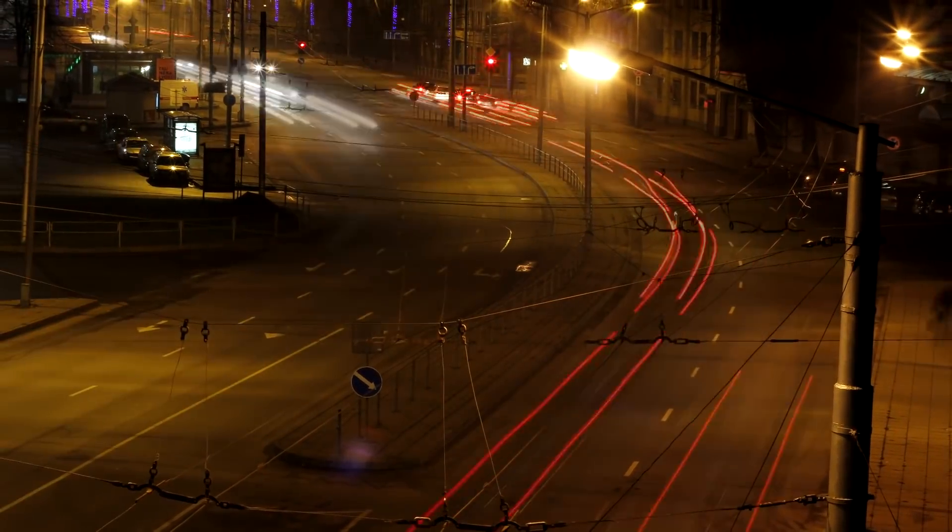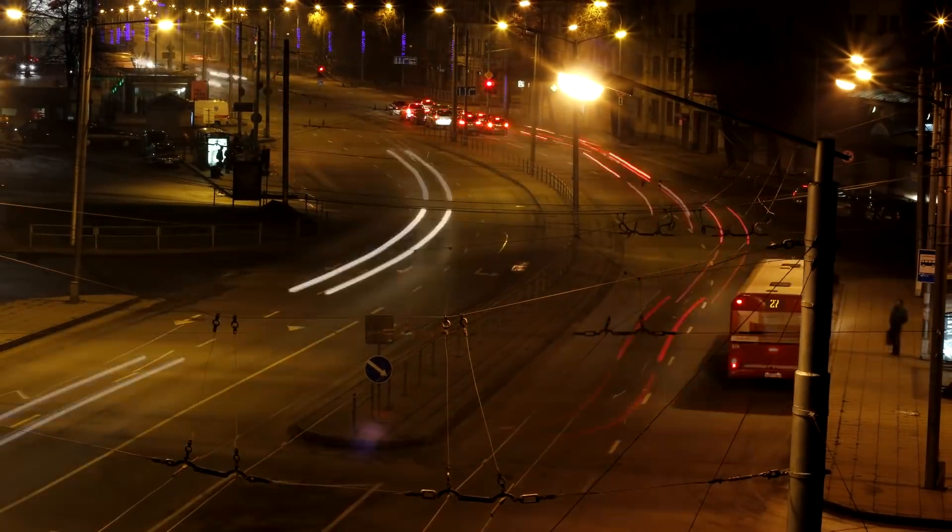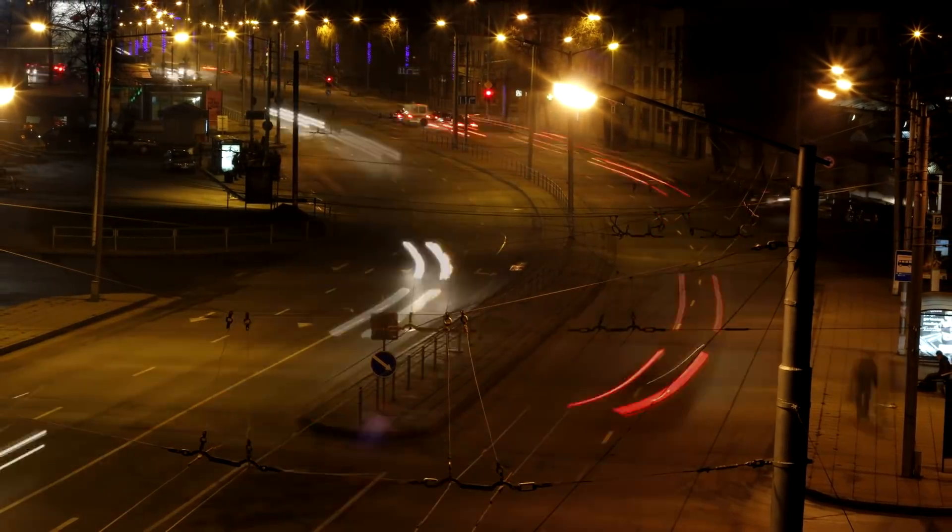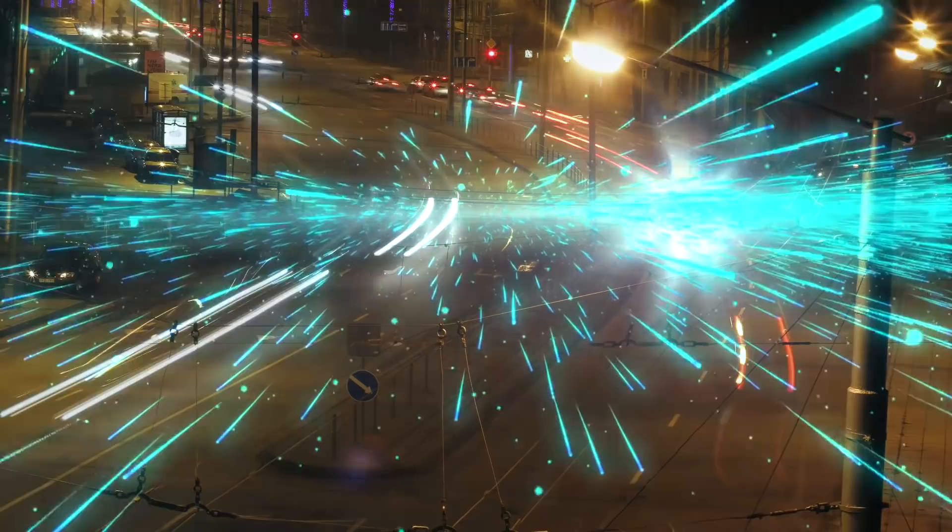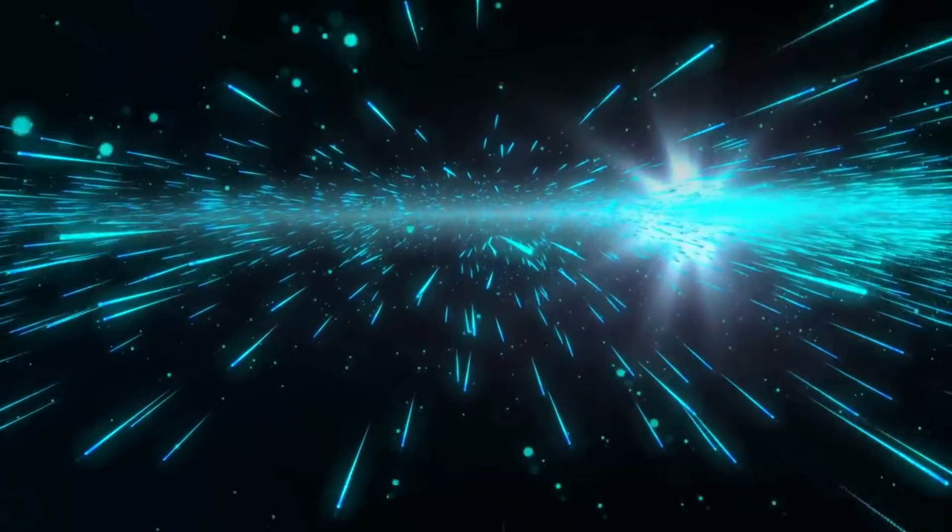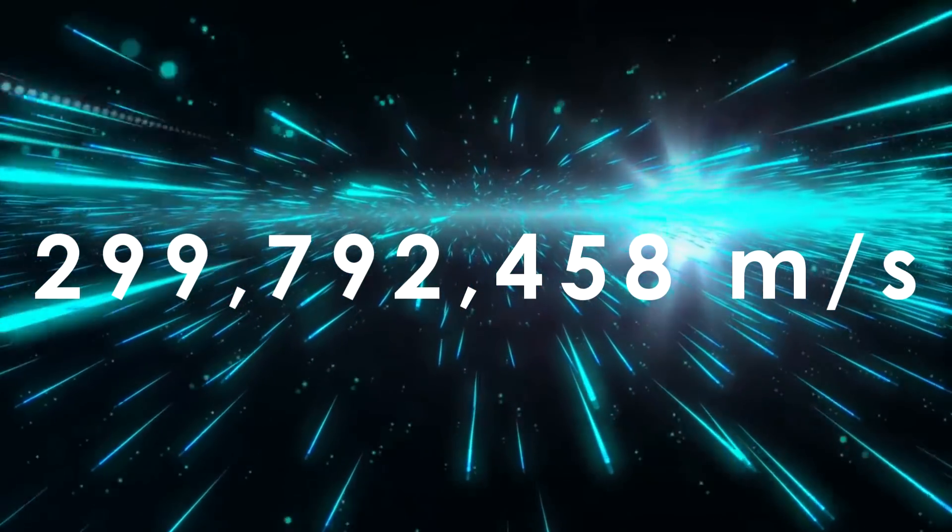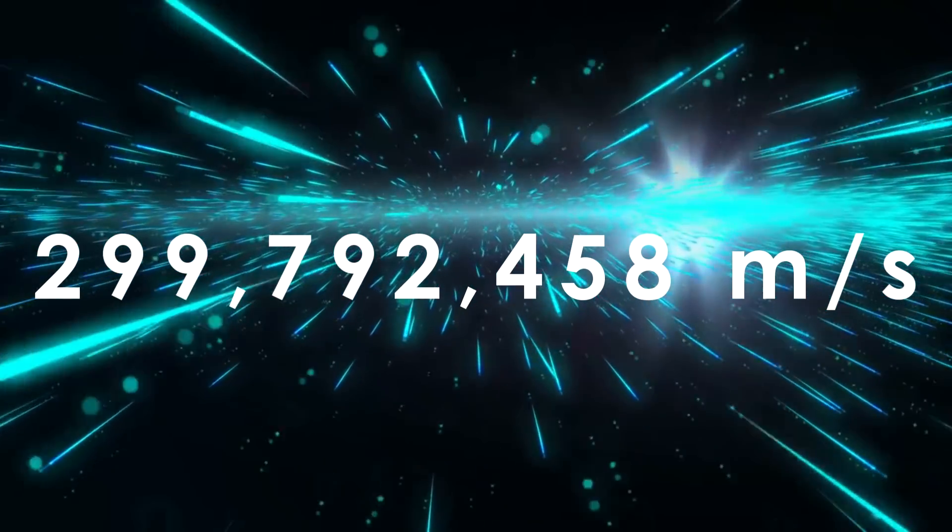If you want to travel to the stars, it is clear you gotta go fast. Much faster than what we have achieved so far. In our universe however, there is a speed limit. The speed of light is a universal constant. According to physics, particles with the property of mass will always travel slower than 299,792,458 meters per second.